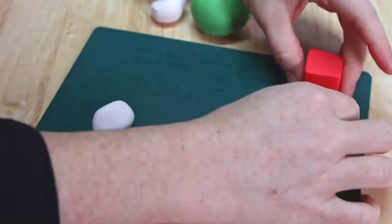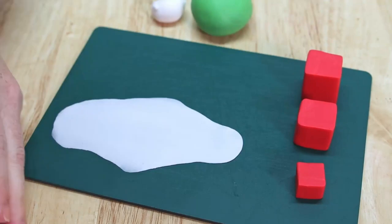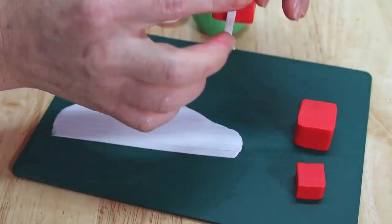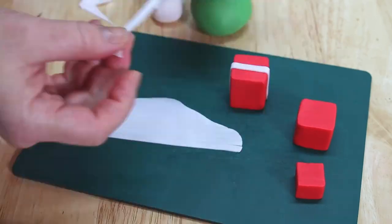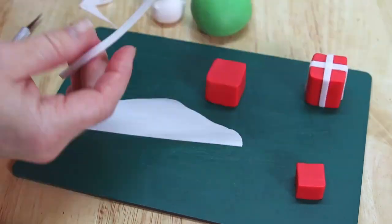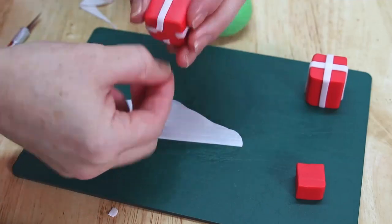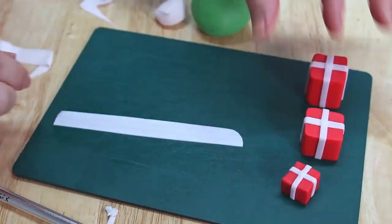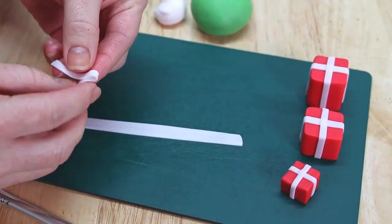So now that we have our boxes, they're going to need some bows and ribbon before they're ready to go under the tree. So I'm going to go ahead and roll out a piece of white fondant, cut out some nice thin ribbon strips and wrap those around each of our presents. Then I'm going to take some more of those little fondant strips and we're going to make some tiny little bows to make each of our little gifts look complete.